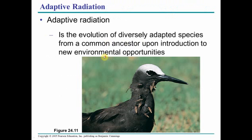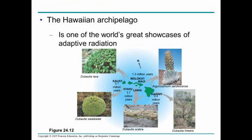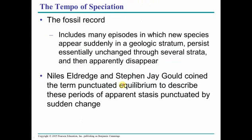Adaptive radiation is when one species branches out due to new environmental conditions and evolves or changes. A typical example is Darwin's finches, or here we have different types of plants on the islands of Hawaii — a very typical place where adaptive radiation occurs. All these different plants are derived from the same ancestor and exist on different islands.